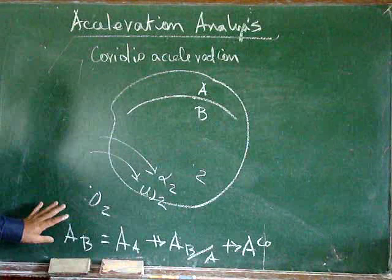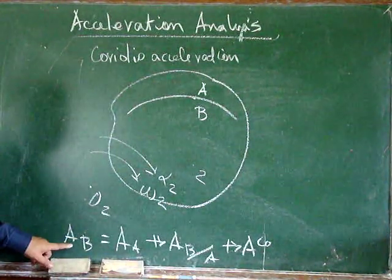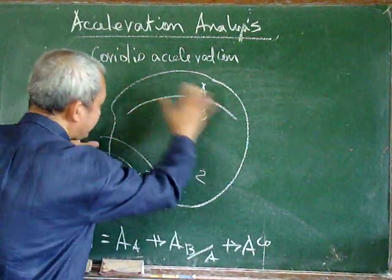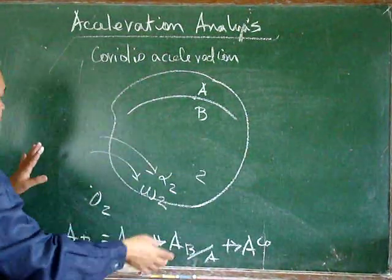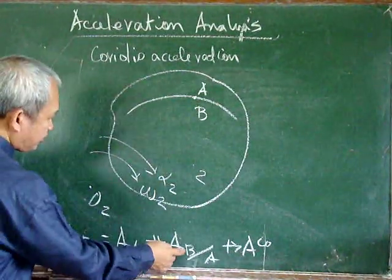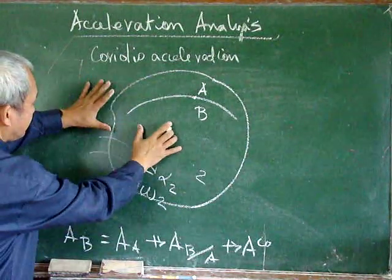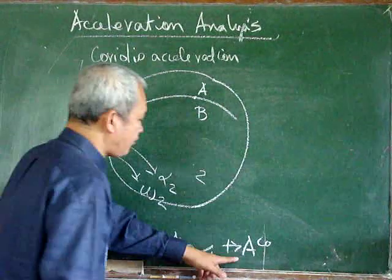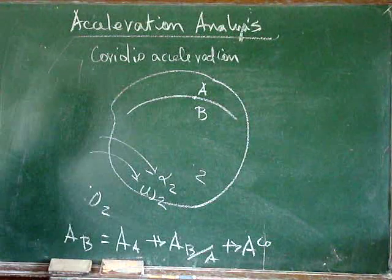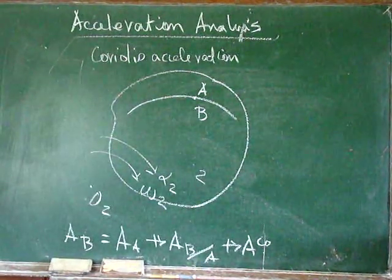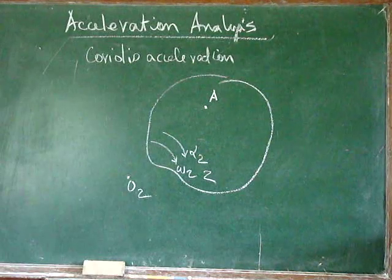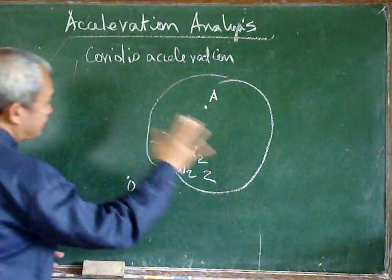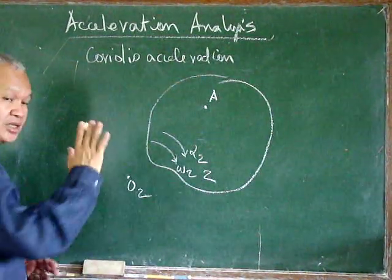Now, what does this mean? It means that for the acceleration of A component, we hold B on this body and allow body 2 to move, and determine the acceleration of that point. For the acceleration of B with respect to A component, we hold body 2 stationary and allow point B to move along that path. And finally, we have the Coriolis component of acceleration, which exists when a point is moving along a body while that body is also moving.